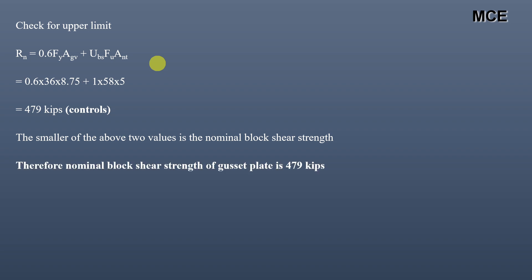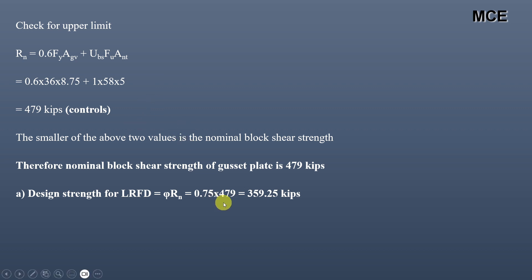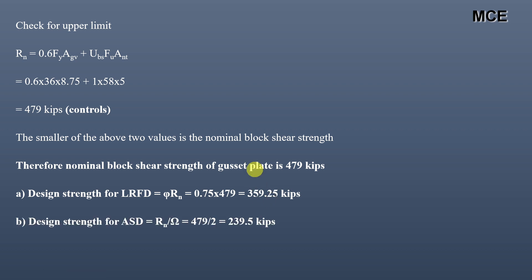The nominal block shear strength of this gusset plate is 479 kips. For LRFD, design strength = φRn = 0.75 × 479 = 359.25 kips. For ASD, allowable strength = Rn/Ω = 479/2 = 239.5 kips. These are the LRFD design strength and ASD allowable strength respectively.